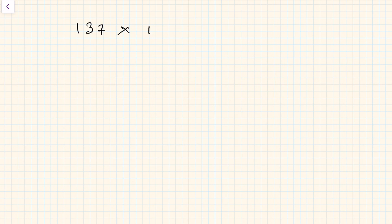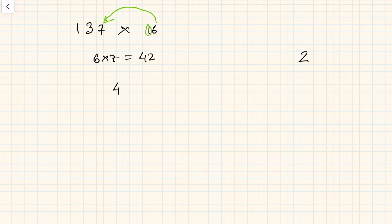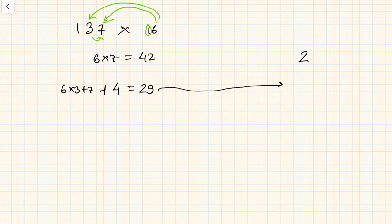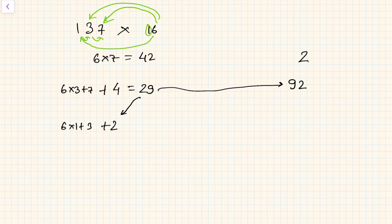Let us take a three-digit number: multiply 137 by 16. Forget the 1; multiply 6 by 7: 6 into 7 = 42. Write 2 here; carry is 4. Now 6 multiplies 3 and add 7: 6 into 3 plus 7 = 18 plus 7 = 25, plus carry 4 = 29. Write 9, carry 2. It becomes '92'.